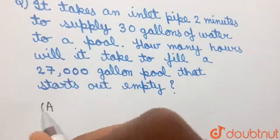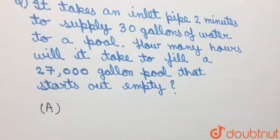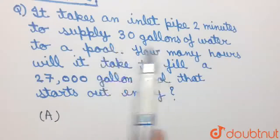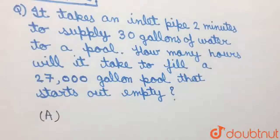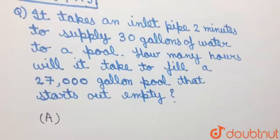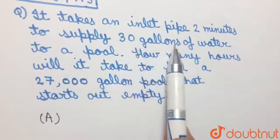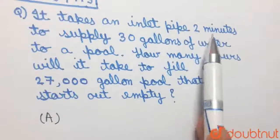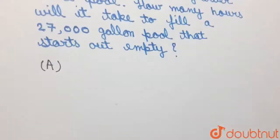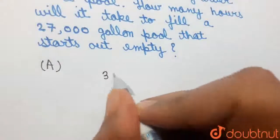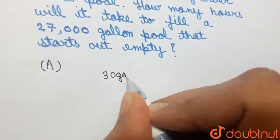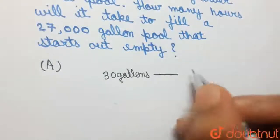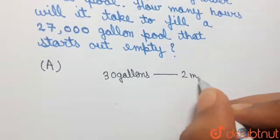First of all, writing down the given information. It has been said that the inlet pipe takes 2 minutes to supply 30 gallons of water. This can also be written in the form: in order to supply 30 gallons of water, the time taken by the inlet pipe is 2 minutes.